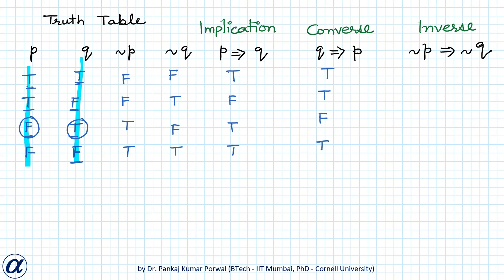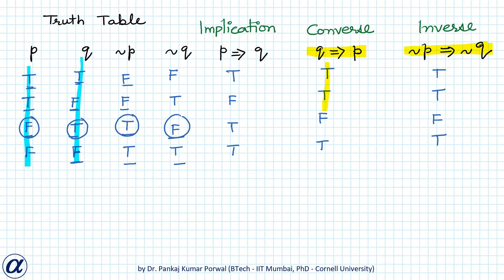For the inverse, not p implies not q: when not p is false, anything can be implied, so the result is true; again not p is false, so true; when not p is true and not q is false, the implication is false; when both not p and not q are true, the implication is true. The truth tables for the converse and inverse are identical, so the converse and inverse of an implication are equivalent: q implies p is equivalent to not p implies not q.